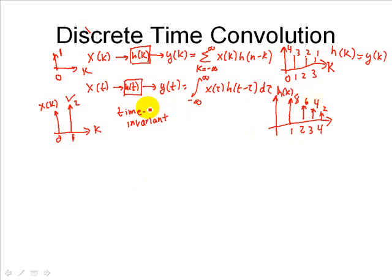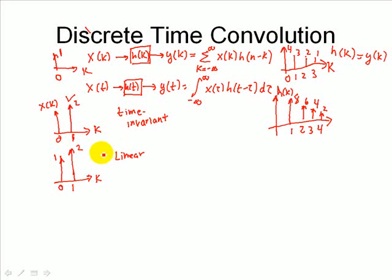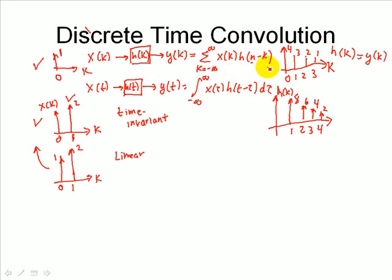Now let's say we have an input that consists of two impulses: one with a height of 1 located at 0, and another with a height of 2 delayed by 1. If the system is linear, that means we can break the input into two pieces — one impulse at 0 with height 1, and another at 1 with height 2. Our output can be the sum of those two individual outputs. We'll add them in tabular form.